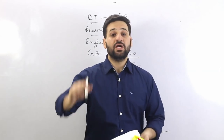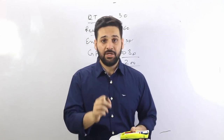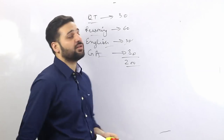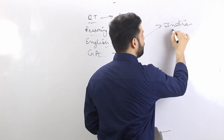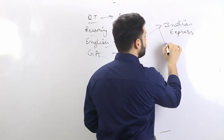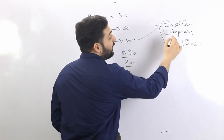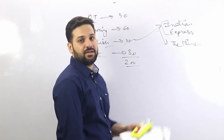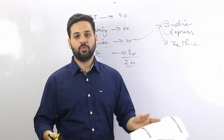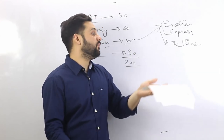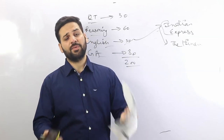How to prepare for English? Read newspapers. Newspapers are the most important study material for the English section as well as for the general awareness section. I recommend Indian Express or The Hindu. I personally read Indian Express, but The Hindu is also good — actually better than Indian Express, but it's not available at my place. So if The Hindu is available at your place, you can read it.